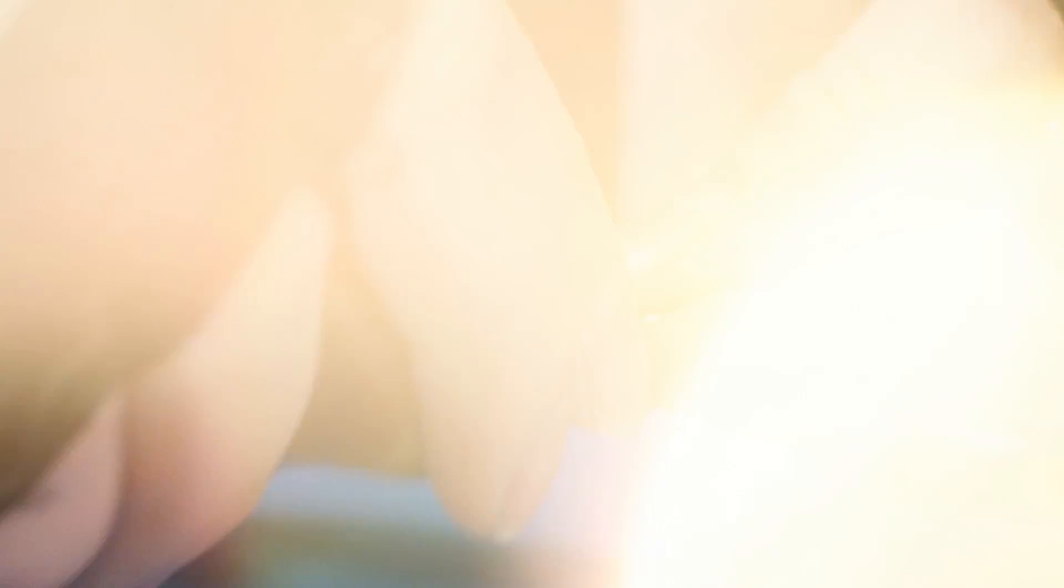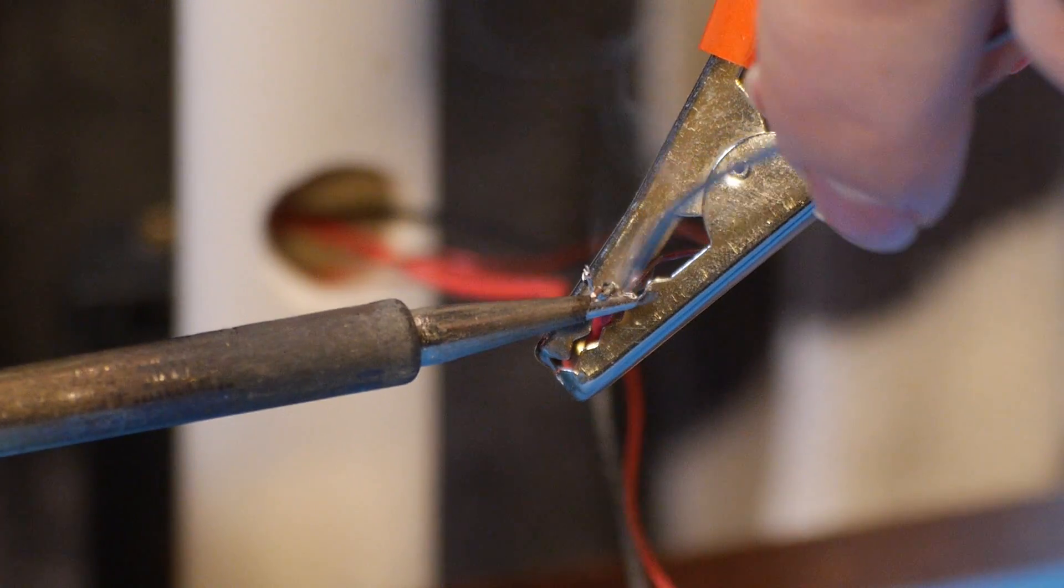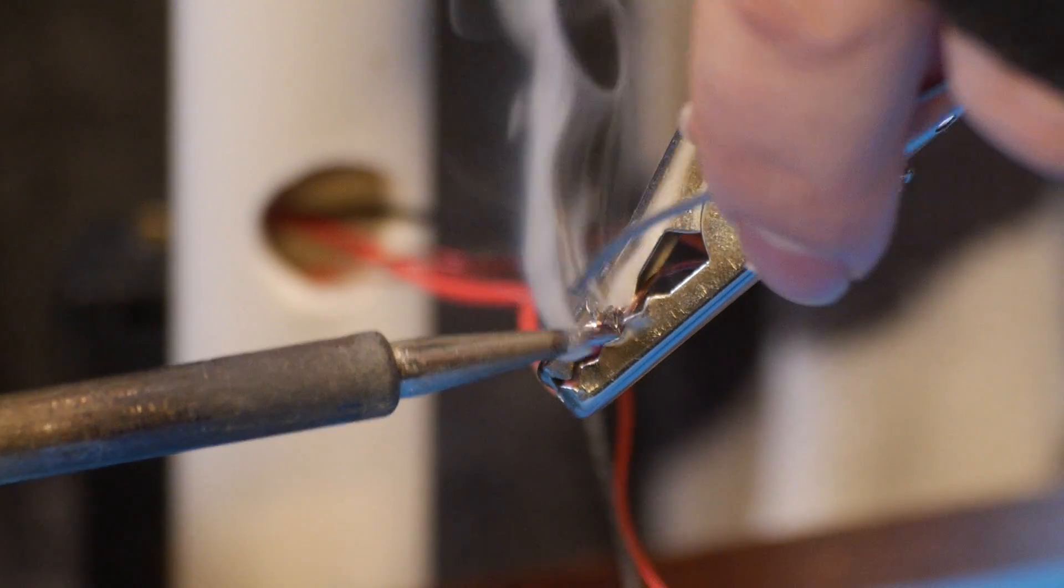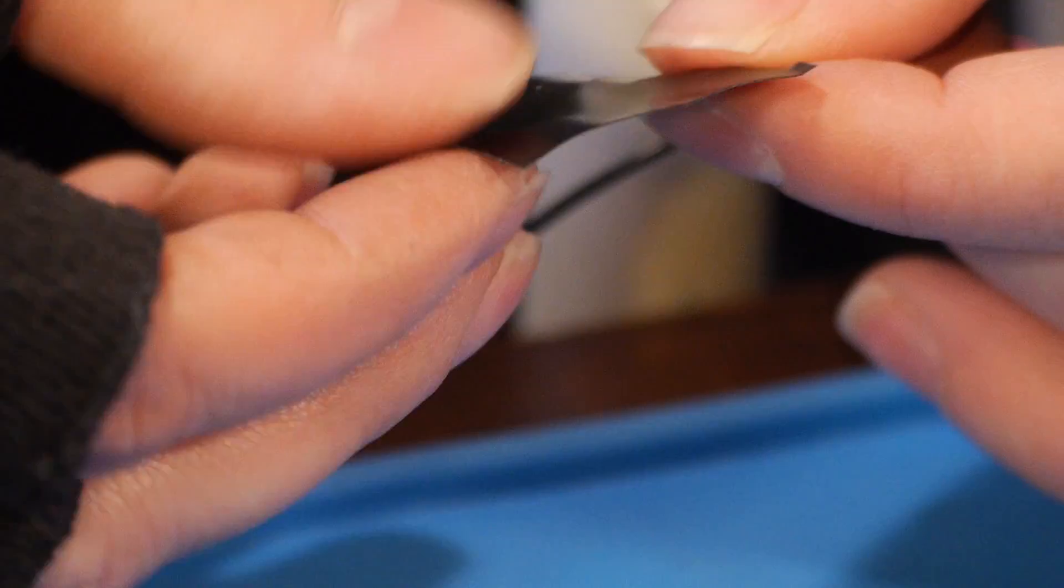We'll connect one battery lead to one end of the magnet wire. Twist those ends together and solder them. If you're doing this quickly, you don't have to use a soldering iron. Just make sure you twist them really well and then seal it with electrical tape. Either way, we want to wrap the end connection in electrical tape to prevent any shorts.